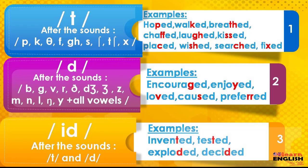/p/ like in hoped, /k/ like in walked, /f/ like in breathed, /f/ like in chaffed, /f/ like in laughed, /s/ like in kissed, /ʃ/ like in wished, /tʃ/ like in searched, and /x/ like in fixed. You must always notice these transcriptions. Whenever you find these sounds before ED, automatically the pronunciation of ED will be /t/.